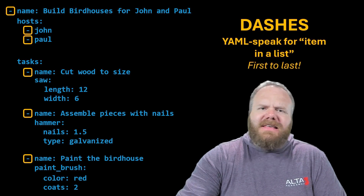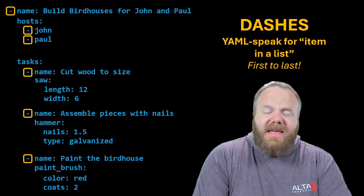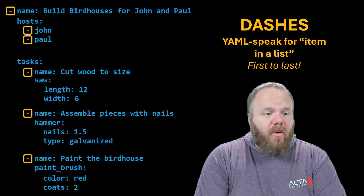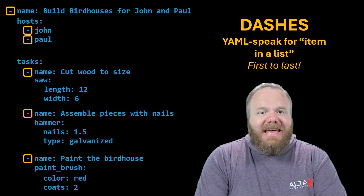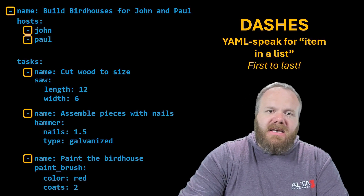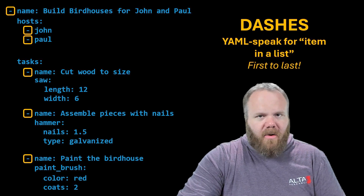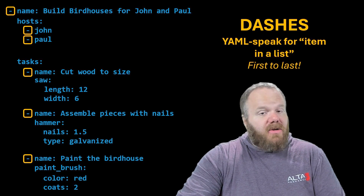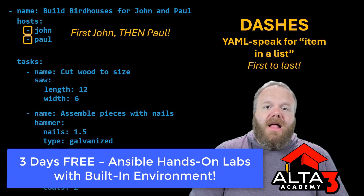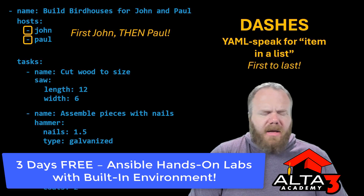Now, what's up with all these dashes we're seeing everywhere? They are not randomly placed. Dashes in YAML mean item in a list. And the thing about lists is there's a first item and a last item. So these dashes are significant. For instance, Ansible allows you to configure multiple hosts at the same time.